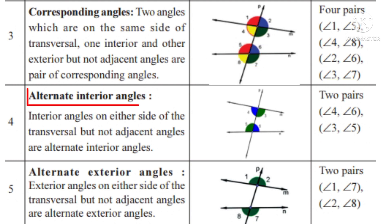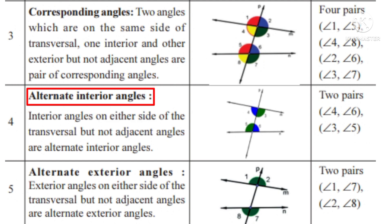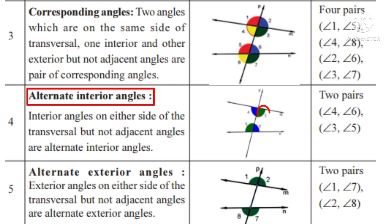Number 4: alternate interior angles. Alternate means on either side. The angles which lie on either side of the transversal but both are interior. One pair is angle 4 and angle 6; another pair is angle 3 and angle 5.